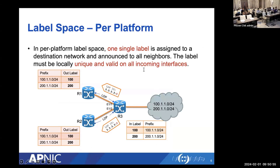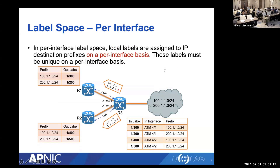In per-platform label space, a single label is assigned to a destination network and announced to all peers — the label must be locally unique and valid on all incoming interfaces, regardless of which interface the MPLS packet arrives on. In per-interface label space, labels are assigned per destination per interface and must be unique per interface, so the router has different expectations for incoming MPLS labels on different interfaces. Per-interface label space was typically applied in legacy ATM networks and is rare in today's deployments.